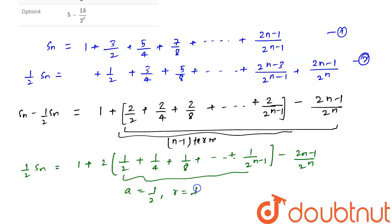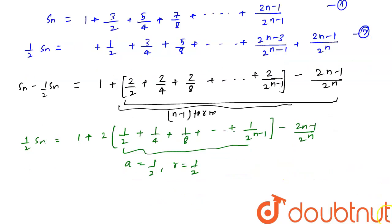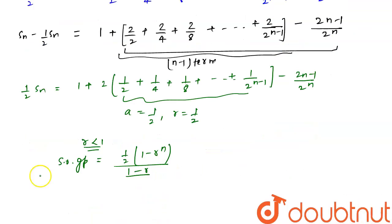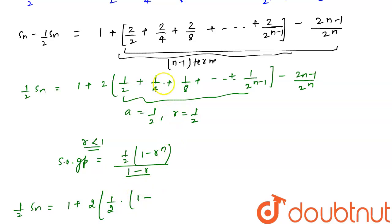We know that the sum of a GP with r less than 1 is a·(1 − rⁿ)/(1 − r). Applying this formula, the GP sum becomes (1/2)·(1 − (1/2)^(n−1)) / (1 − 1/2), which simplifies since the 1/2 factors cancel.